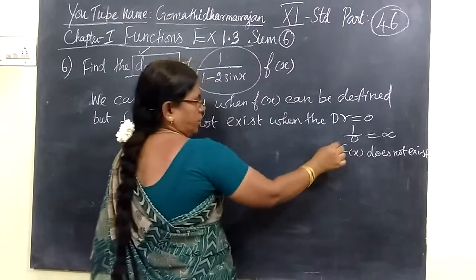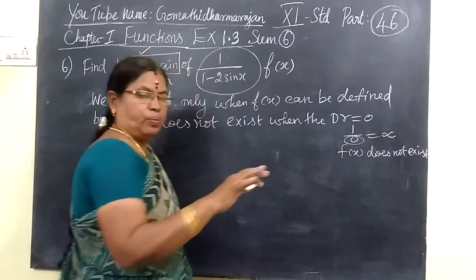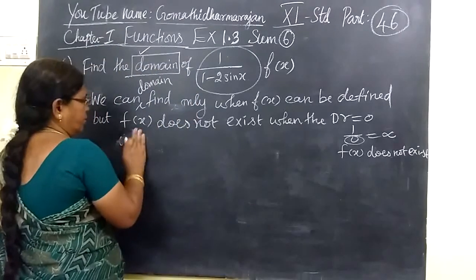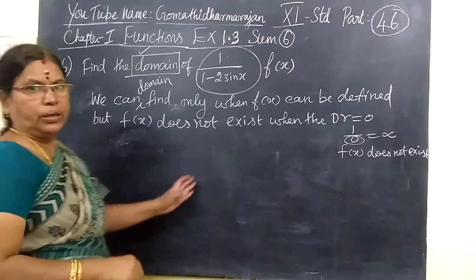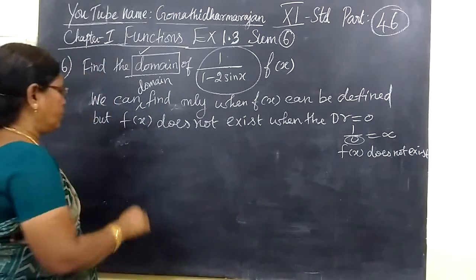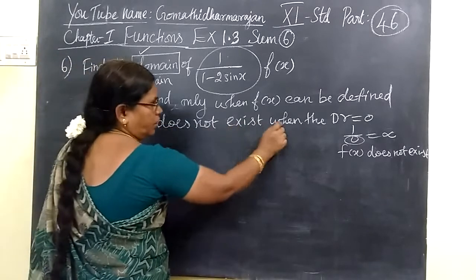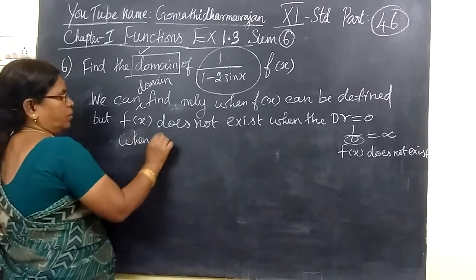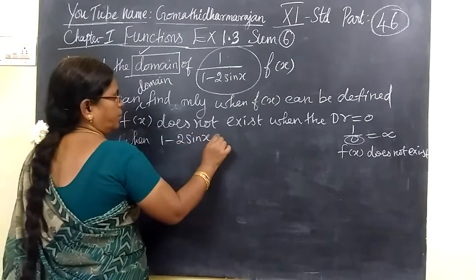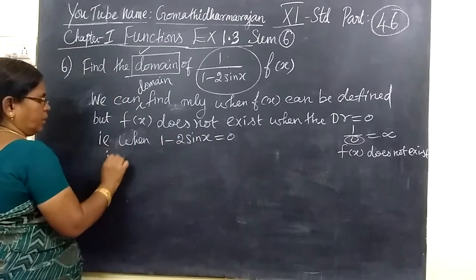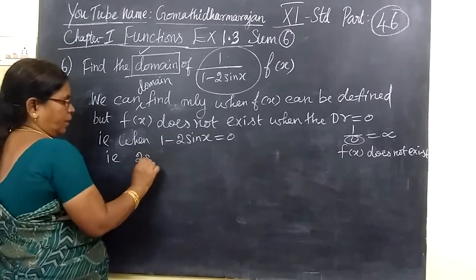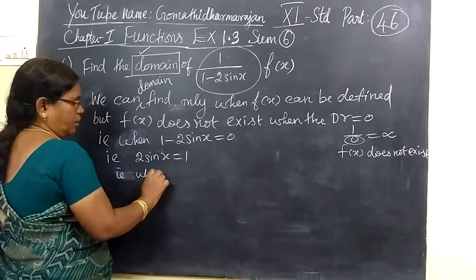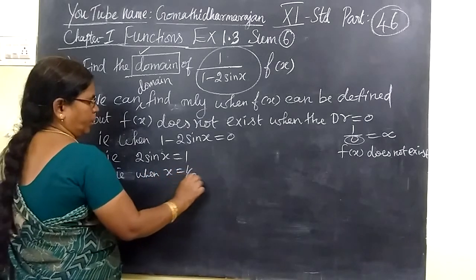The function does not exist when the denominator is equal to 0. So we need to remove those x values. The denominator is 1 minus 2 sin x. The function does not exist when 1 minus 2 sin x is equal to 0. So that means 2 sin x is equal to 1, which gives sin x equal to 1 by 2.